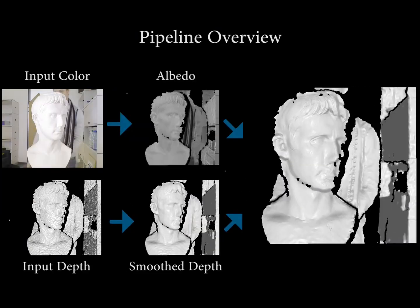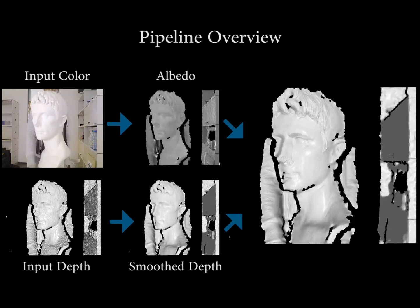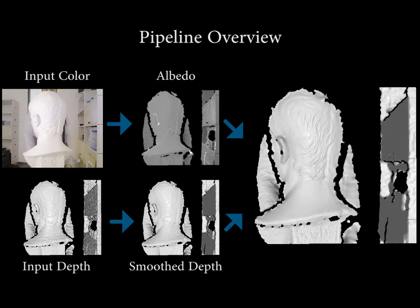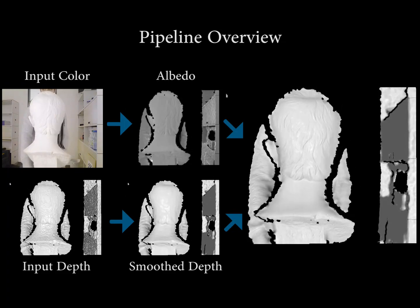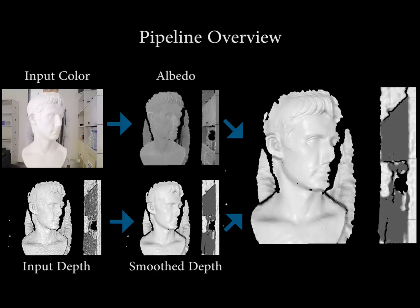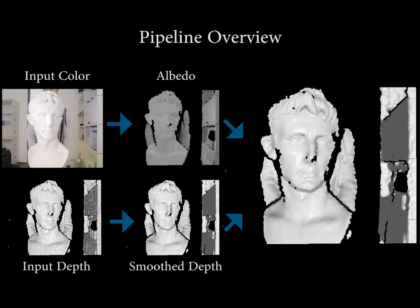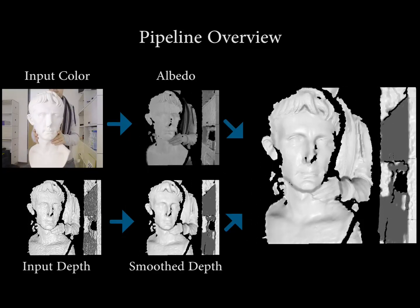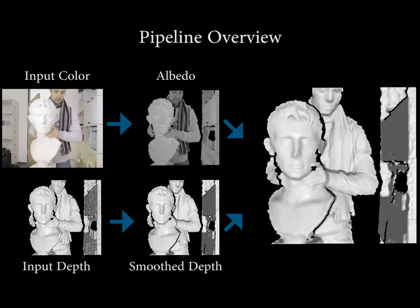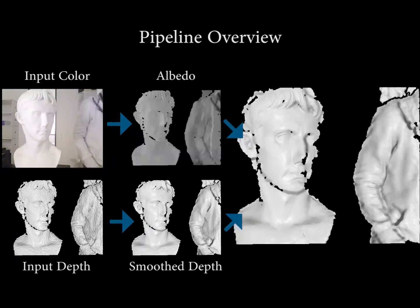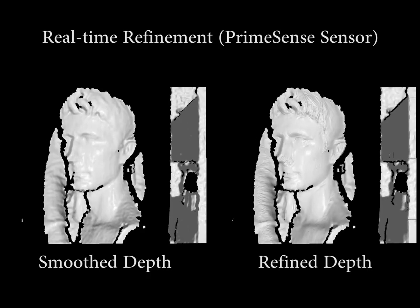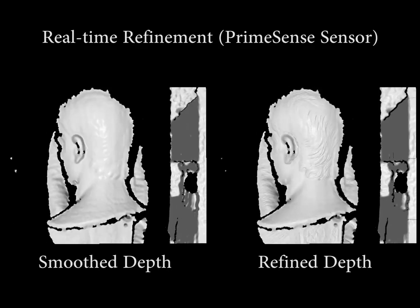Based on the input RGBD data, our method first filters the raw depth map to obtain a smooth depth, and then uses it for lighting and albedo estimation. Based on the estimated lighting and albedo, we refine the depth map in real-time by optimizing a shading-constrained energy function using a novel GPU-based hierarchical Gauss-Newton solver.